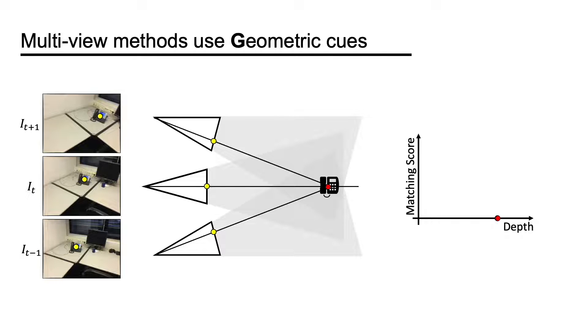This visual similarity, or the matching score, can be computed between the CNN features. And by evaluating multiple depth candidates, we can find the one with the highest matching score.